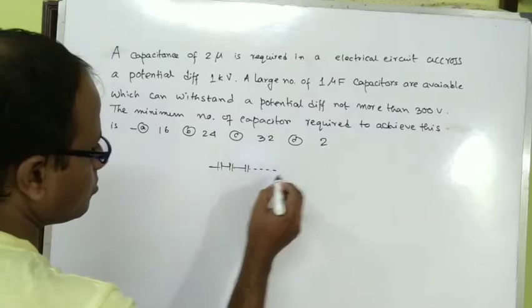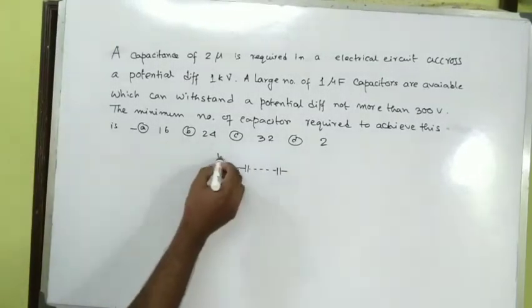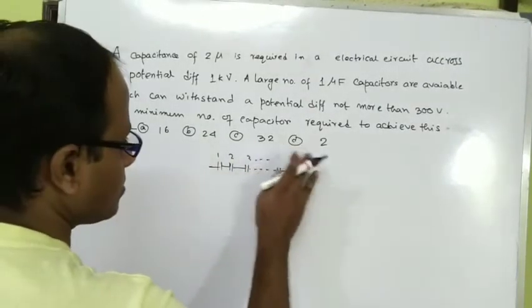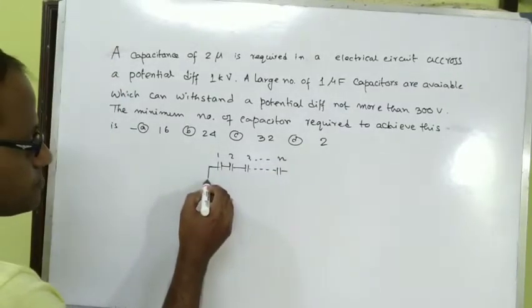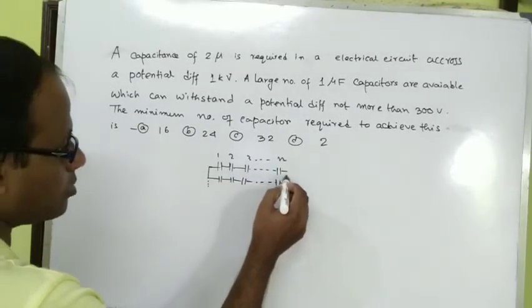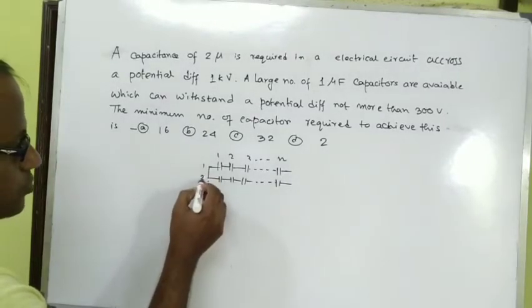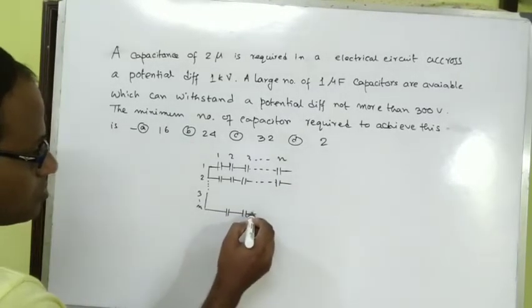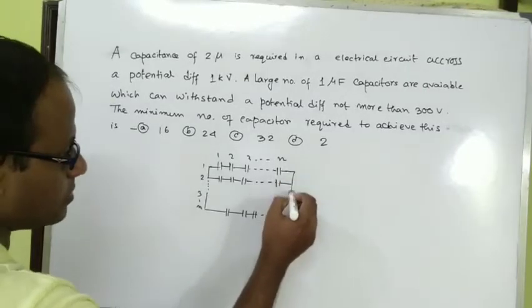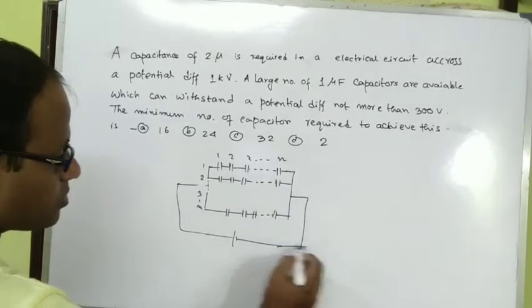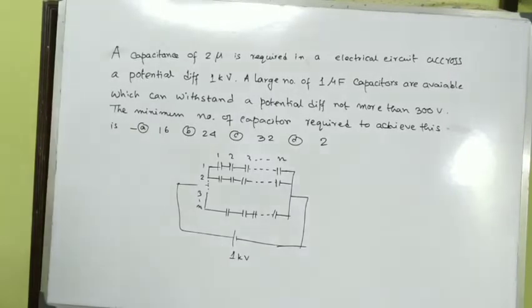Let me draw the circuit. We will connect capacitors in series and parallel combinations. In series connection, the voltage divides. In parallel connection, the capacitances add up. The system voltage is 1000 volts total.